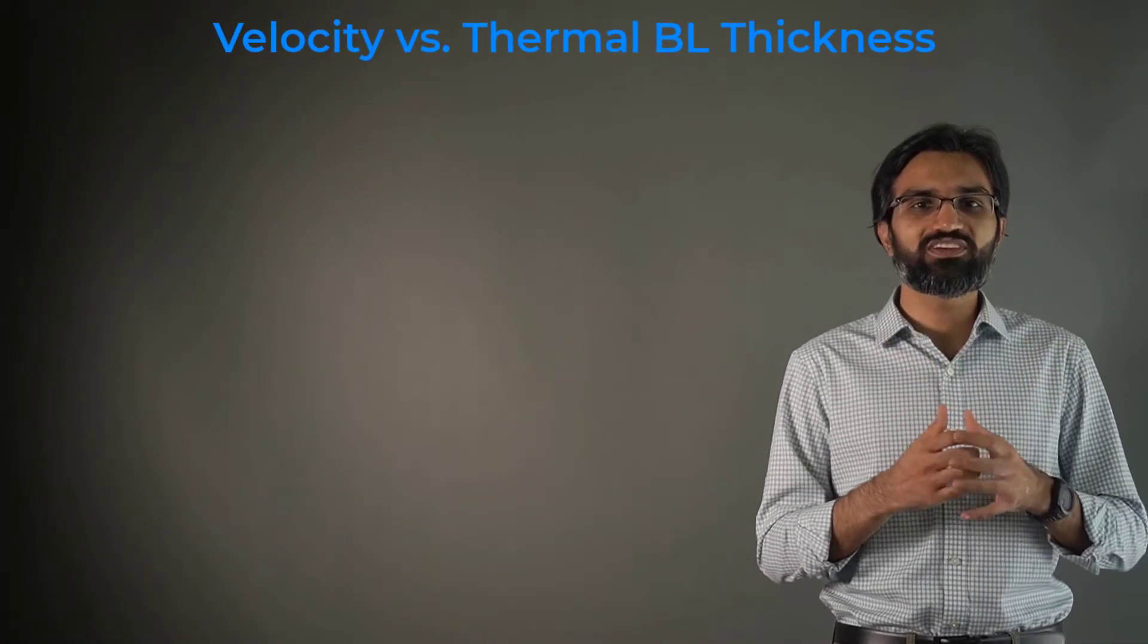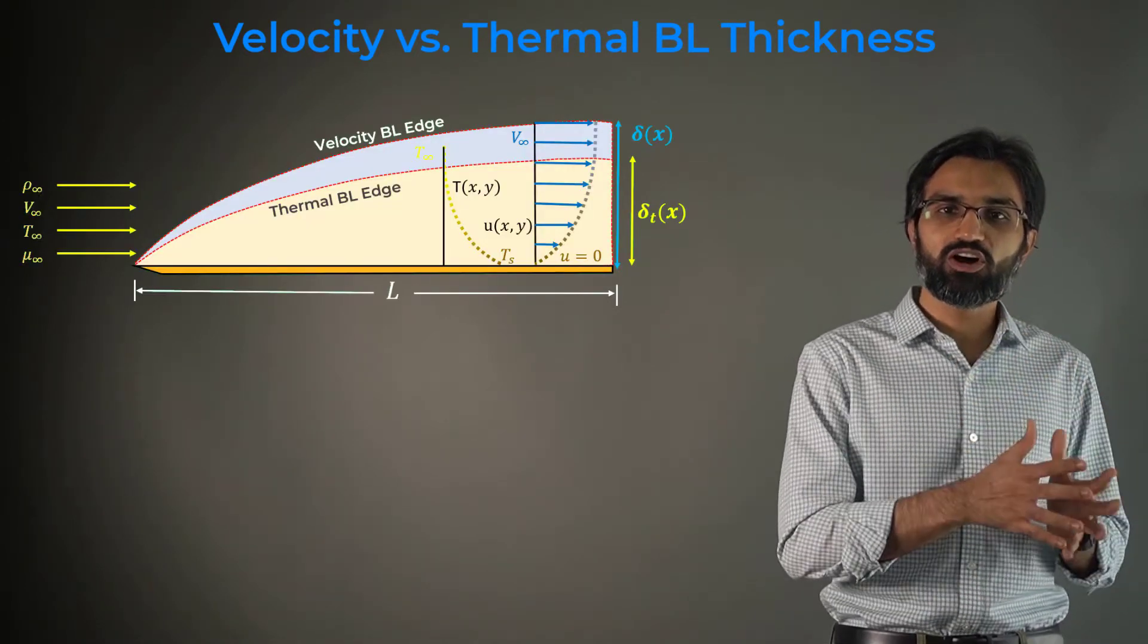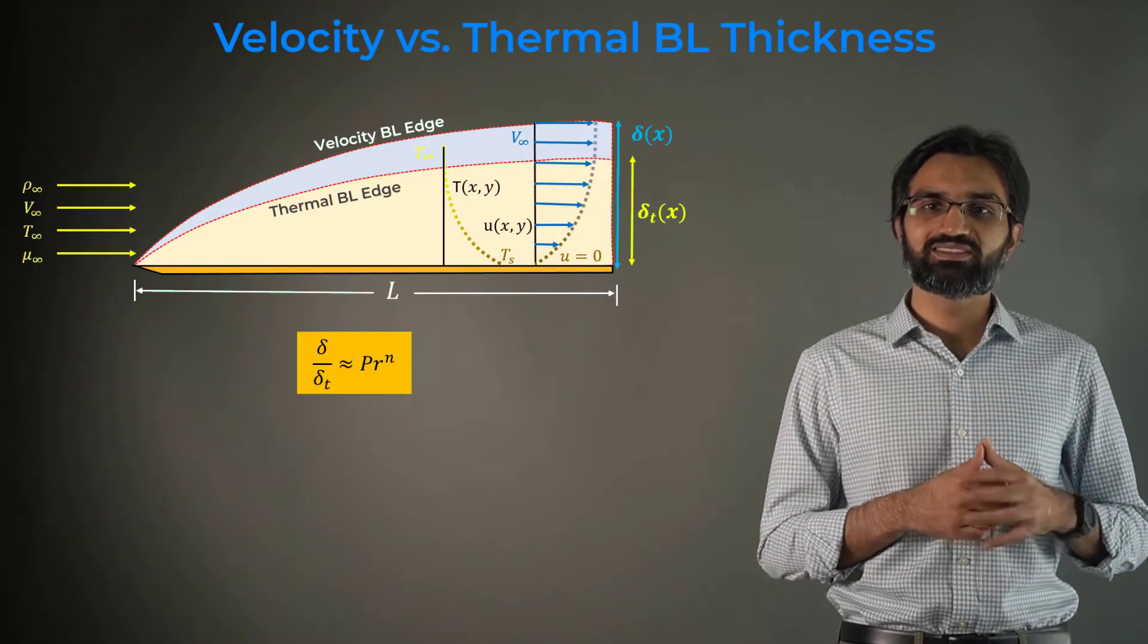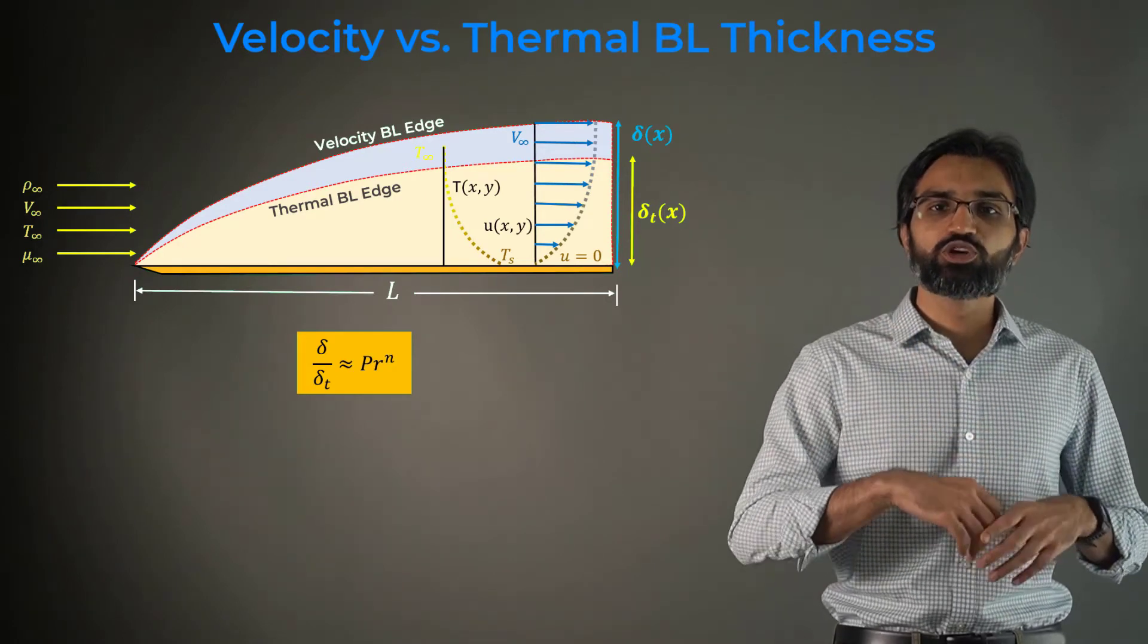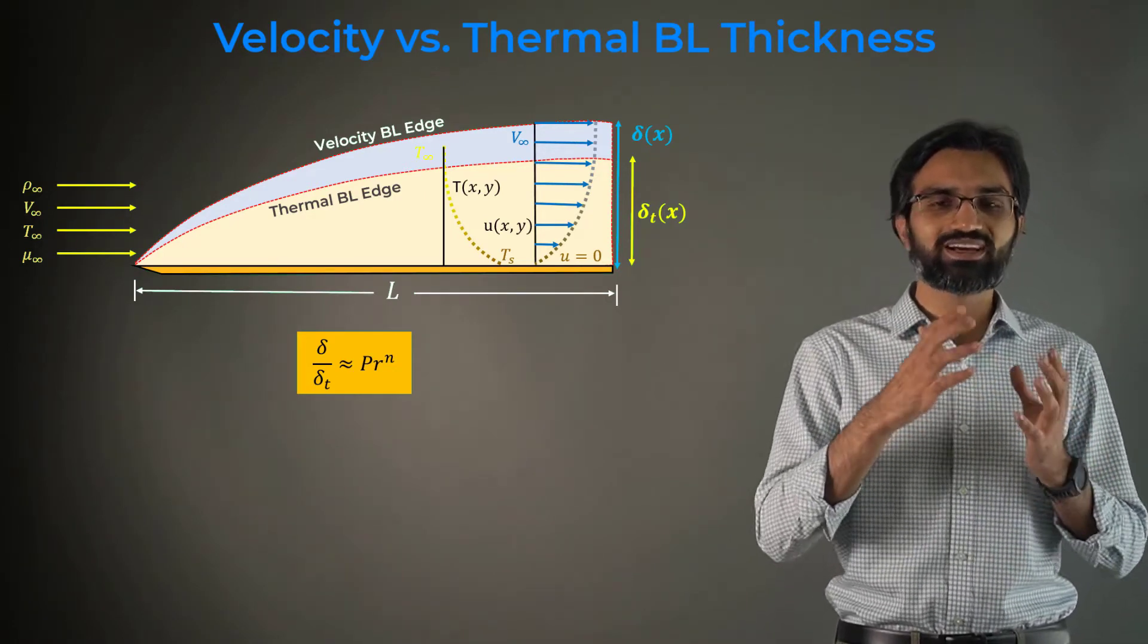One important observation can be made from the dimensionless numbers. The ratio of the velocity to thermal boundary layer thickness is proportional to the nth power of the fluid Prandtl number.